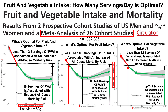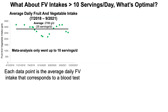Based on this meta-analysis, 10 servings of fruits and vegetables per day may be optimal for health. But what about intakes greater than 10 servings per day — is that optimal? My average daily fruit and vegetable intake since July 2018 through September 2021 — a three-plus year period — is about 2,800 grams per day, which equates to 35 servings per day. I've been tracking macro and micronutrients since 2015, and since 2018 I've tracked individual food amounts, so I know my average daily intake.